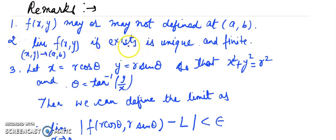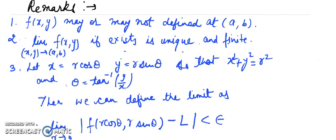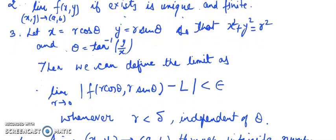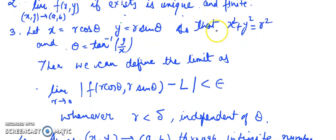Second is since the limit is unique, the limit of f(x,y), if it is existing, is unique and finite. The limit should be finite in value and it should be the same whatever path, because there are so many paths under which it can be approaching towards the point.